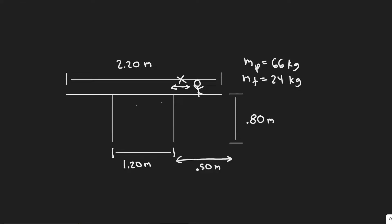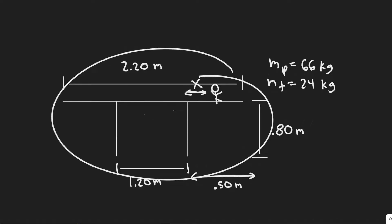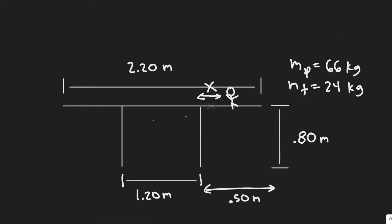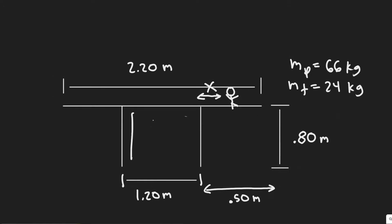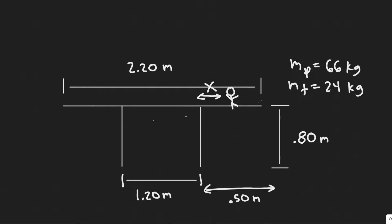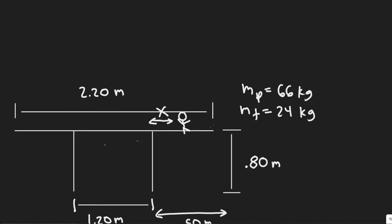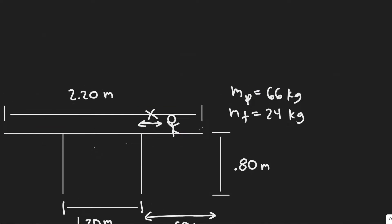In this problem we're told: how close to the edge of the 24-kilogram table shown in the figure can a 66-kilogram person sit without tipping it over? This is the table, and we're given some information. This distance here is 2.2 meters, the distance between the two legs of the table is 1.2 meters, the distance from this point to the end of the table is 0.5 meters, and the height of the table is 0.8. We're also given the masses of both the table and the person.